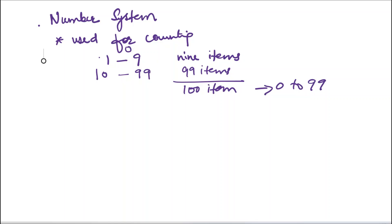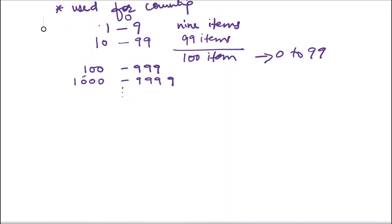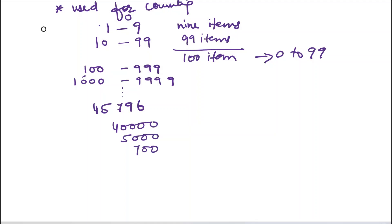As we increase the place values and number of digits, the number of items that we can count increases. This is beneficial because we take place values. All of you have read about place values. Suppose I have a number 45,796 — this number can be written as a summation of these numbers.